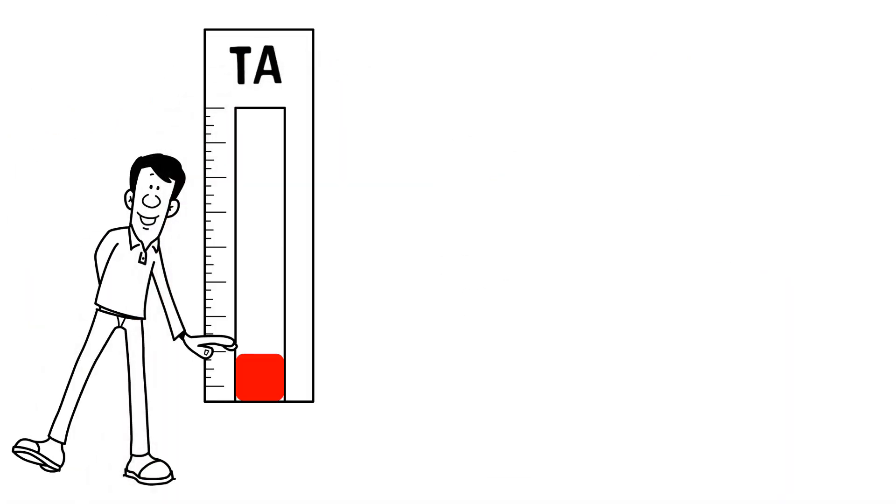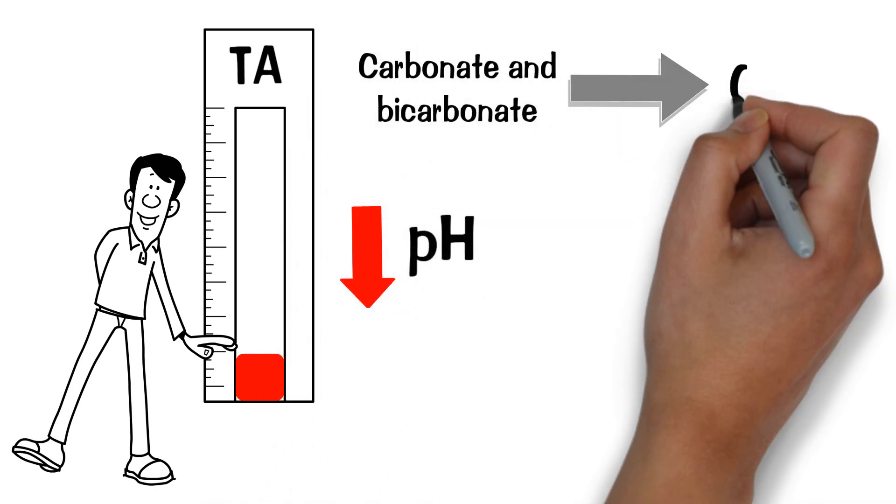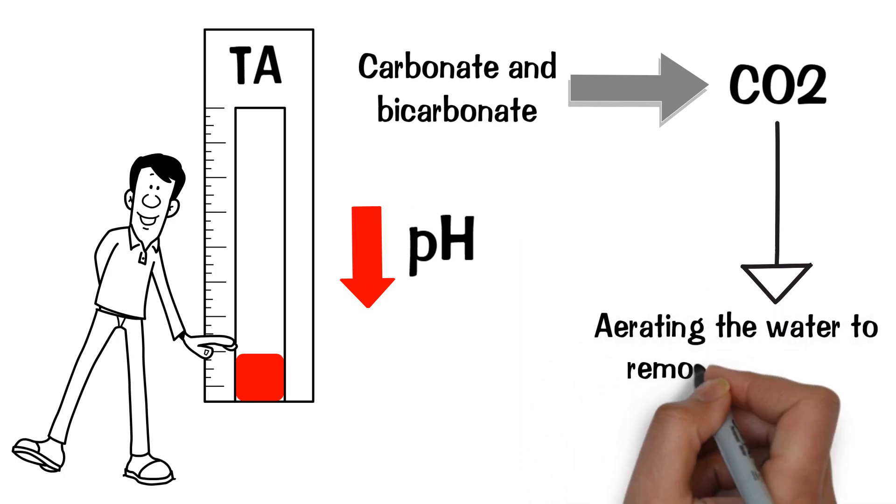Reducing total alkalinity is done by lowering the pH, which temporarily converts some of the carbonate and bicarbonate to CO2, and then aerating the water to remove the CO2.